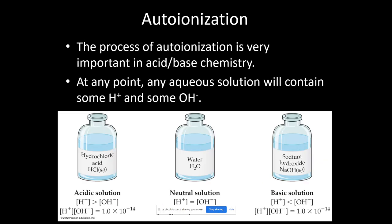Now we get into the autoionization of water, which is key to acid-base equilibrium. You should know how to use the expression: [H+][OH-] = 1 × 10^-14. If I give you either [H+] or [OH-], you should be able to solve for the other. There will be a couple of questions on the exam that are just that simple — I give you one concentration and ask you to find the other.